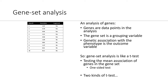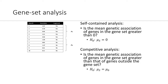There are two kinds of tests. In a self-contained analysis, you ask whether the mean genetic association of genes in a gene set is greater than zero — that's your null versus alternative hypothesis. In a competitive analysis, you ask whether the mean genetic association of genes in a gene set is greater than that of the genes outside of the gene set. That's the competitive analysis.